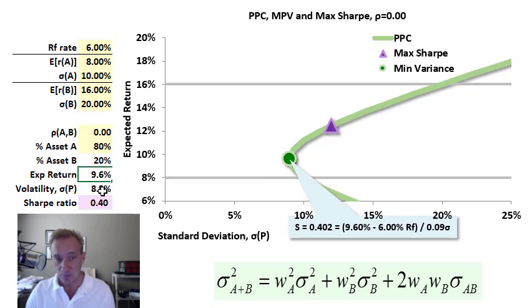Notice that this portfolio's expected return is 9.6%, but the volatility in this case, of the portfolio allocated 80-20, is only 8.9%.